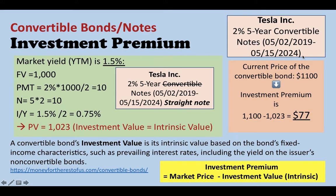If this note were not convertible — just a regular note, we call it a straight note — what would the price be? Let's say the market yield for this note is 1.5%. Given that, you can calculate the price of the note is $1,230. This present value is the price of the straight note, also called the investment value or intrinsic value of this straight note.